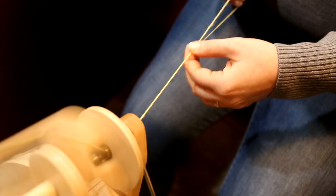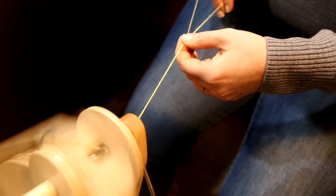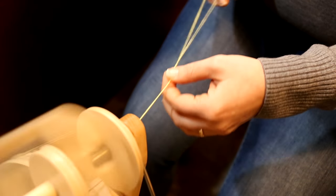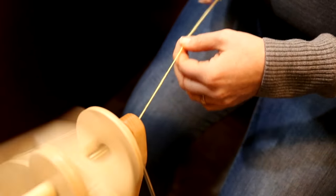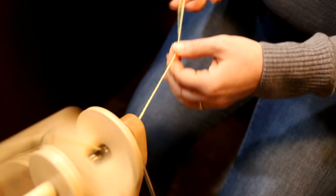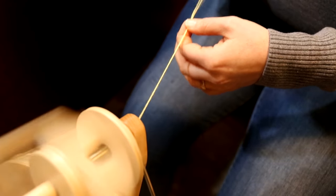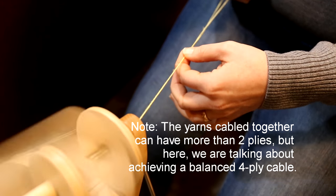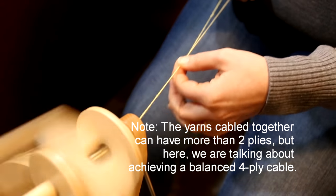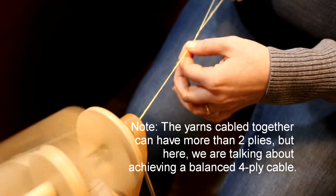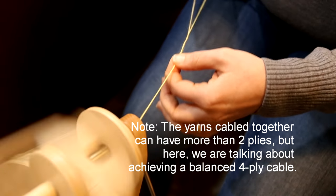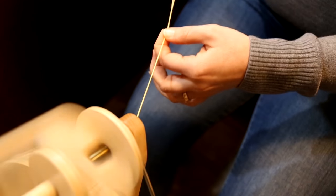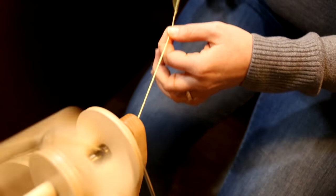It doesn't necessarily have to be your two-ply that you just plied - you could ply it with another two-ply, you could ply it with another commercial yarn. You don't have to ply it with a handspun yarn. If you're going to ply it with a commercial yarn, I would recommend adding extra ply twist to the commercial yarn before you ply them together, otherwise the commercial yarn will end up under-plied when you ply them back together.